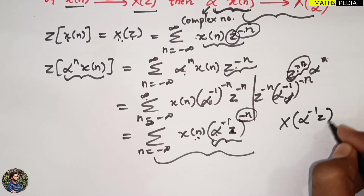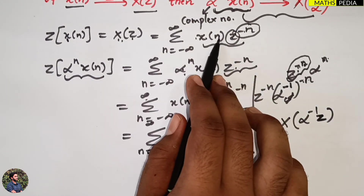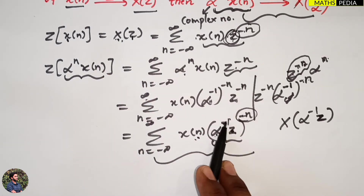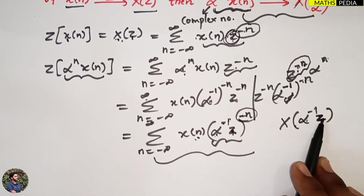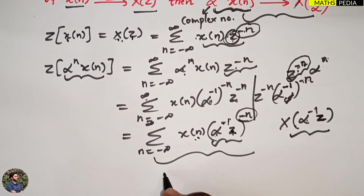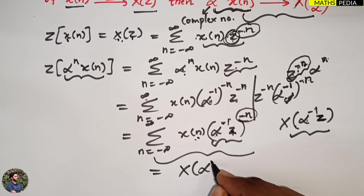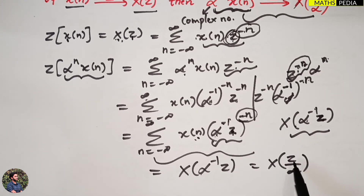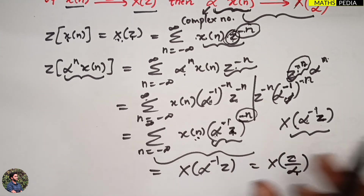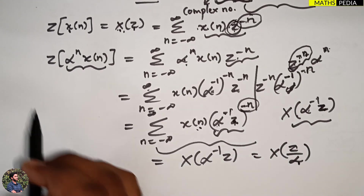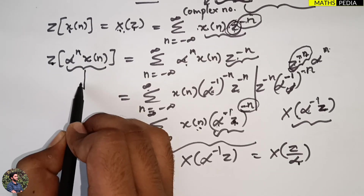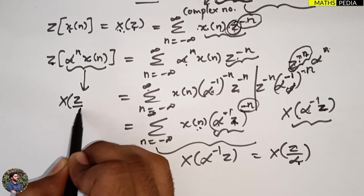Comparing with the standard equation, where X(z) = summation x(n) z^(-n), here instead of z we have alpha^(-1) times z. So the result is X(alpha^(-1) times z), which equals X(z/alpha), since alpha^(-1) is nothing but 1/alpha. Therefore, the Z-transform of alpha^n times x(n) equals X(z/alpha).